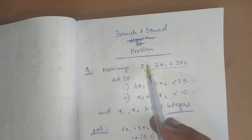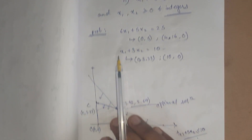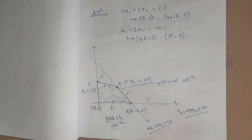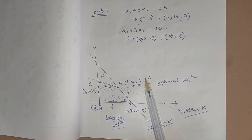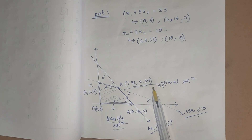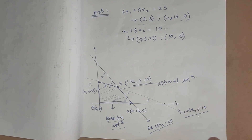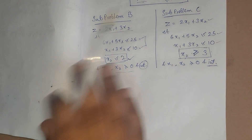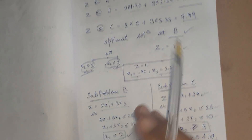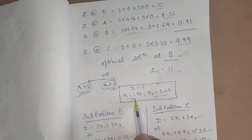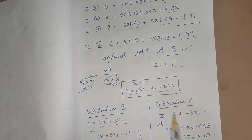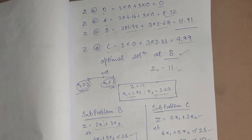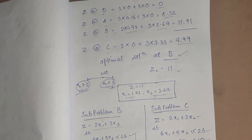The feasible region has extreme points O, A, and B. We put each into the objective function Z to find which gives the maximum value. After evaluating, point B gives the maximum — that is the optimal solution. However, the problem is that x1 = 1.92 and x2 = 2.69, which are not integers.